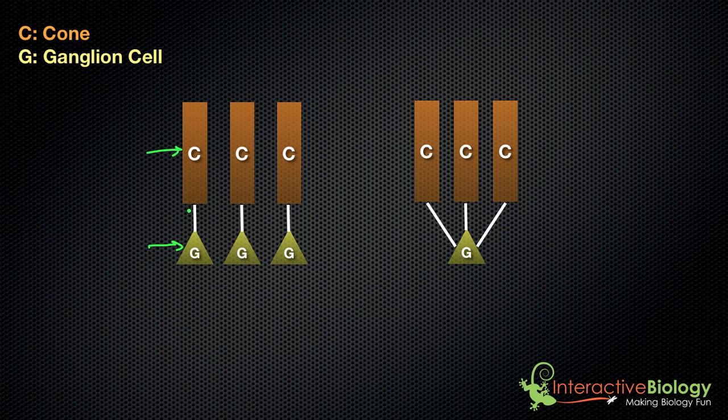But here you can see we have one cone that's connected to the ganglion cell via a bipolar cell. I don't show that here, but just assume that a bipolar cell is in between here. And here we have another cone that's connected via bipolar cell to one ganglion cell, and here we have the same thing.